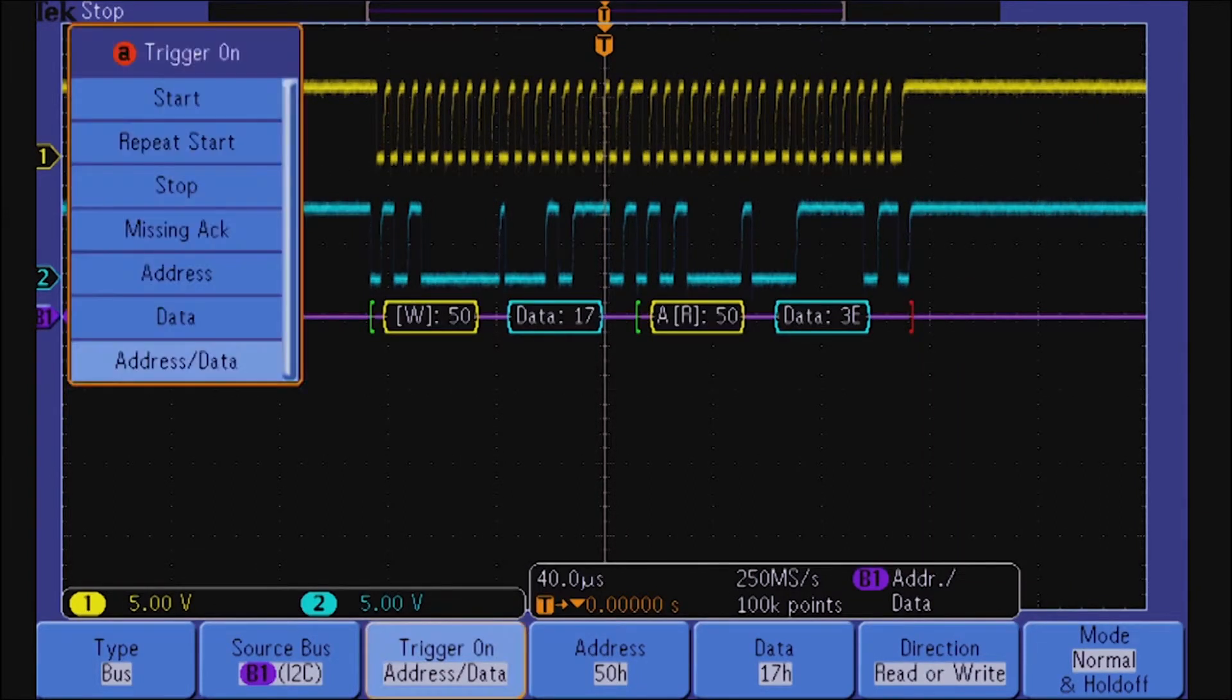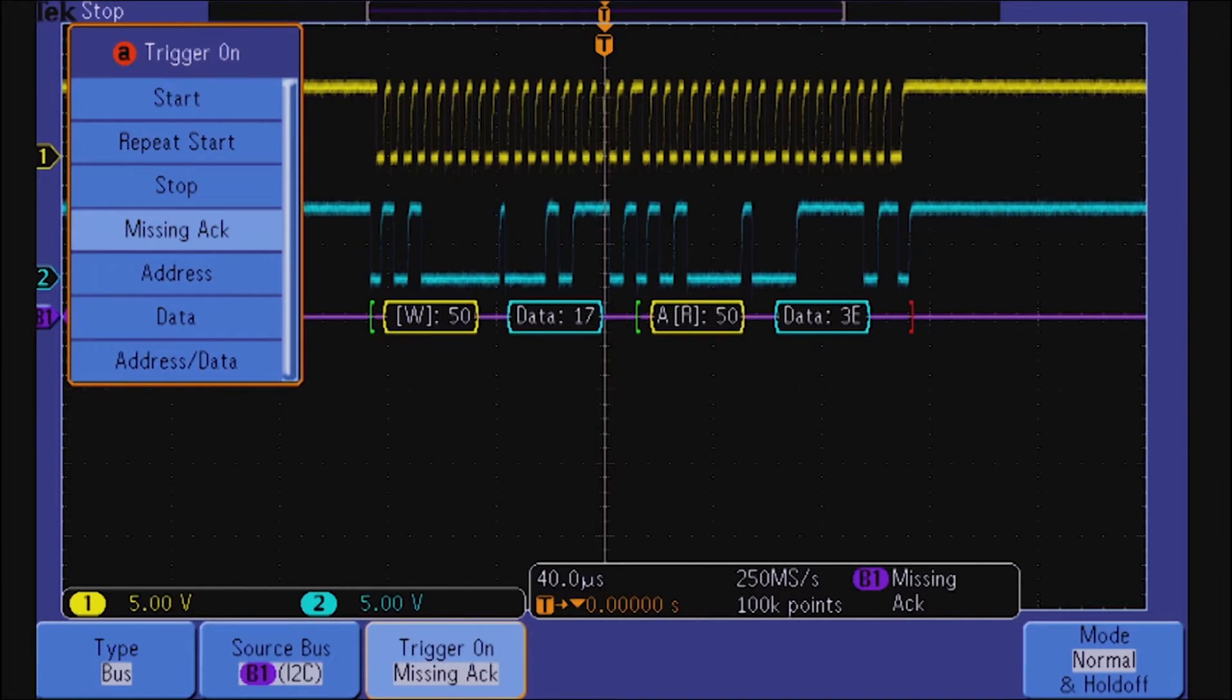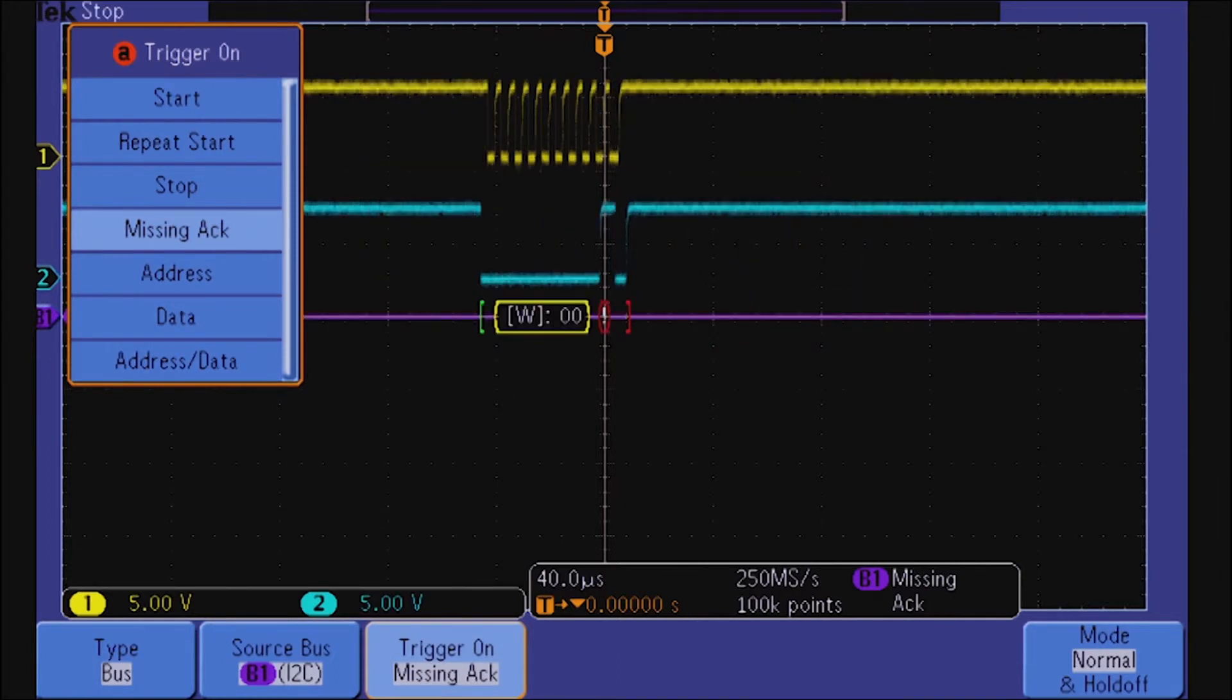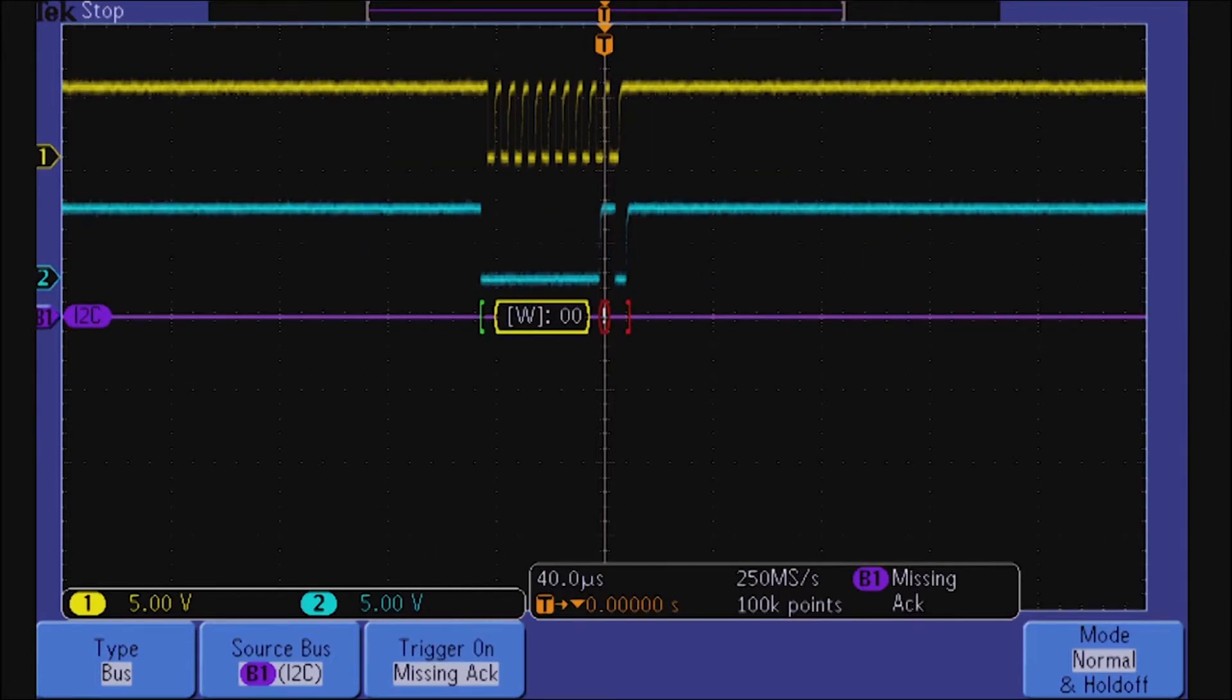The I2C trigger makes it easy to capture exceptional situations, too. For example, you can trigger on a repeated start condition or when a slave device fails to acknowledge a transaction.